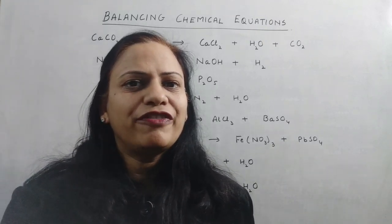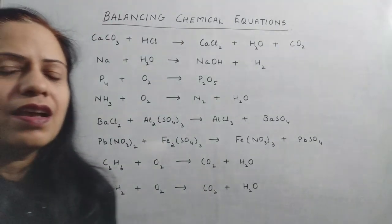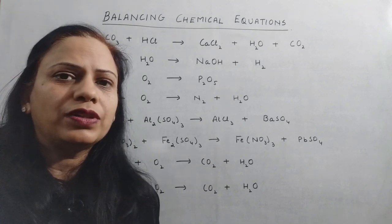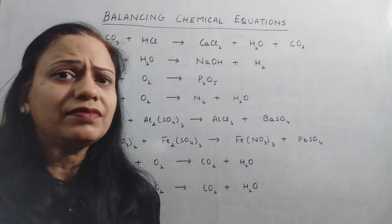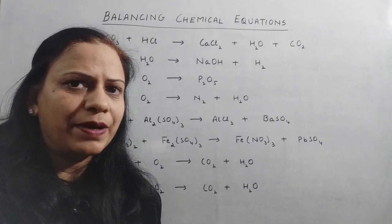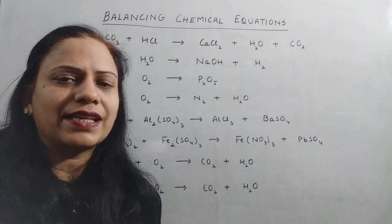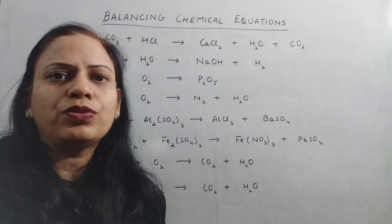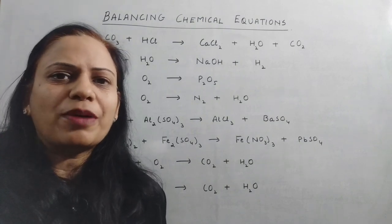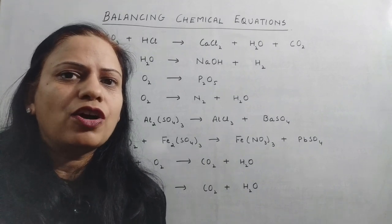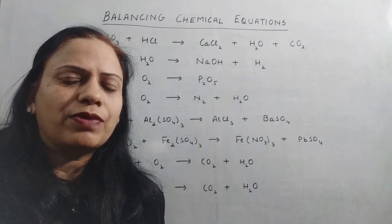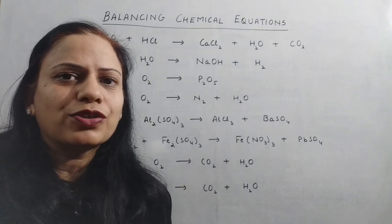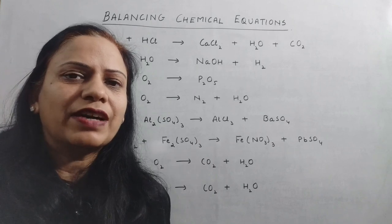Before we begin with the equations, I just want to brief you about how equations are balanced. There is no particular formula or rule by which balancing is done — it is just a hit and trial method. We have to ensure that the number of atoms of one type is equal to the number of atoms of the same type on either side of the equation.